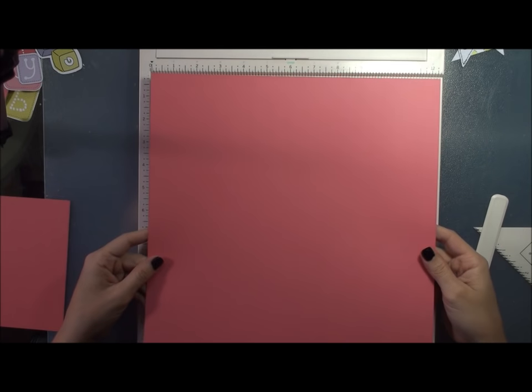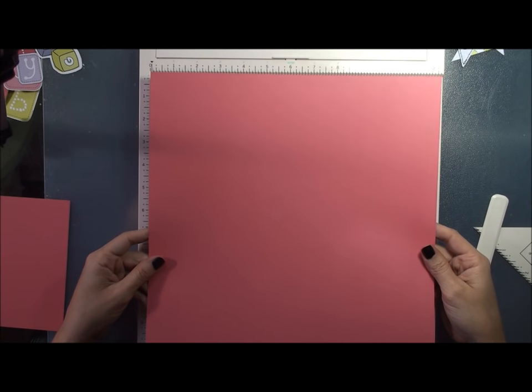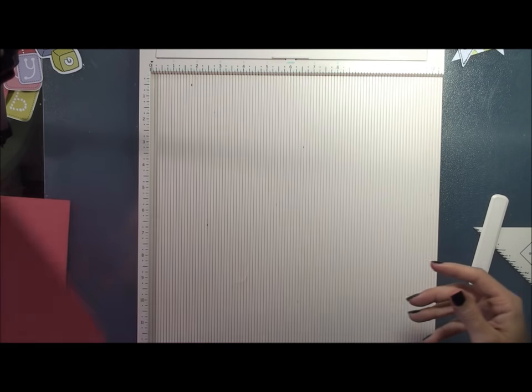So this is the cardstock that I'm starting out with and what you're going to do first is you're going to cut it into three 6x6 inch squares. And once you have those cut you're actually going to score them.